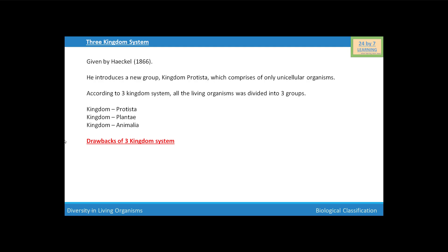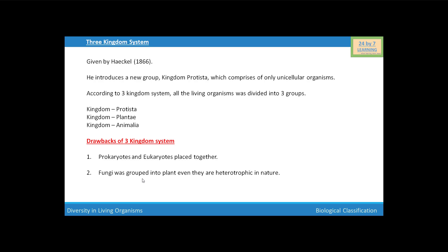Now the drawbacks of the three kingdom system. Number one: also in this system, prokaryotes and eukaryotes are placed together. Fungi are grouped into plants even though they are heterotrophic in nature.